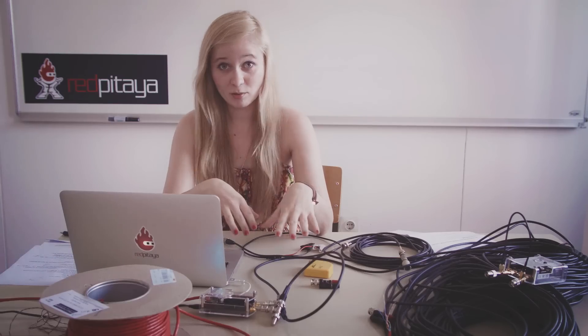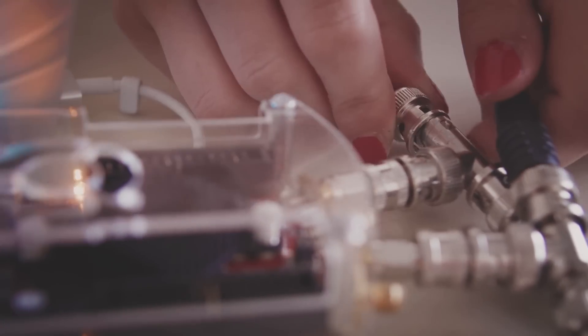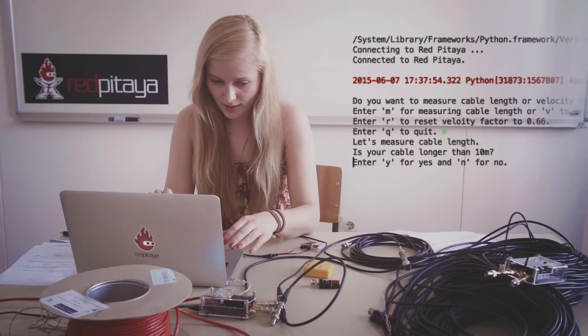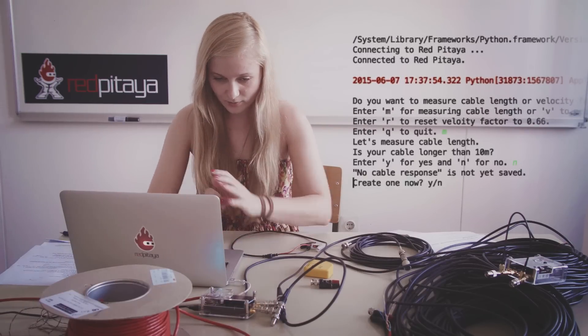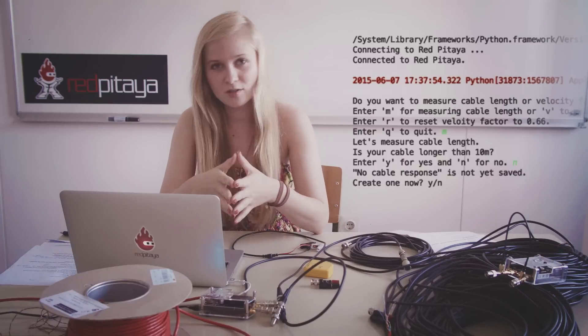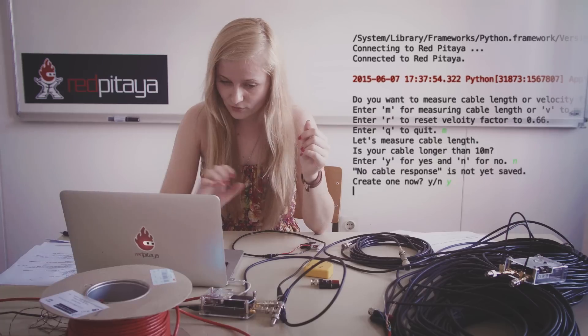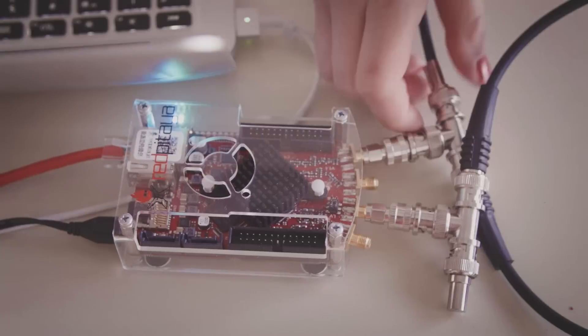Now, let's see how the short cable measurement works. Let's disconnect it. Enter measurement. And now we will press no because we have a short cable. So it says no cable response because it's not saved yet. Click yes. Save. Now it says disconnect cable and press enter.